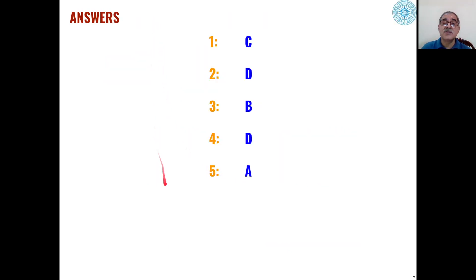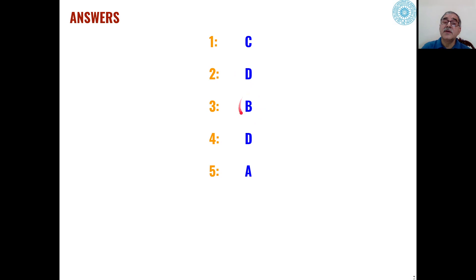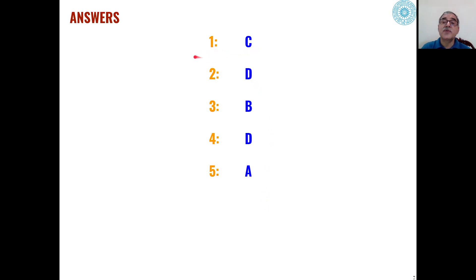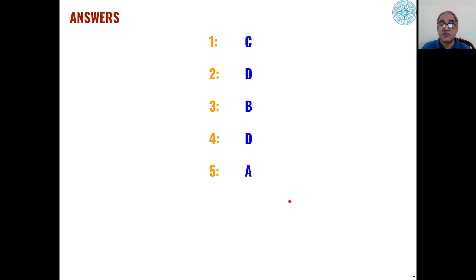As far as the answers to these problems are concerned: in the first problem, the answer is C; in the second problem, the answer is D; in the third, the answer is B; in the fourth, the answer is D; and in the fifth, the answer is A. Now in subsequent slides, we will see how these products are formed and what is the mechanism of formation of these products out of the four choices.